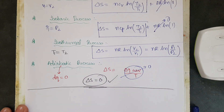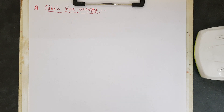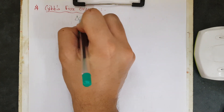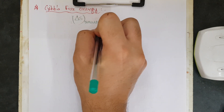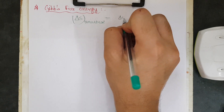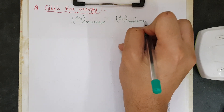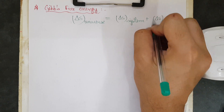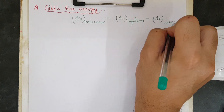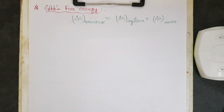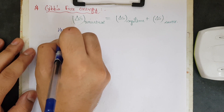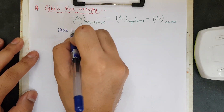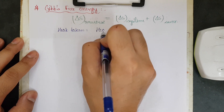Now let us move on to Gibbs free energy. First, understand that the change in entropy for the universe equals the change in entropy of the system plus the change in entropy of the surroundings.